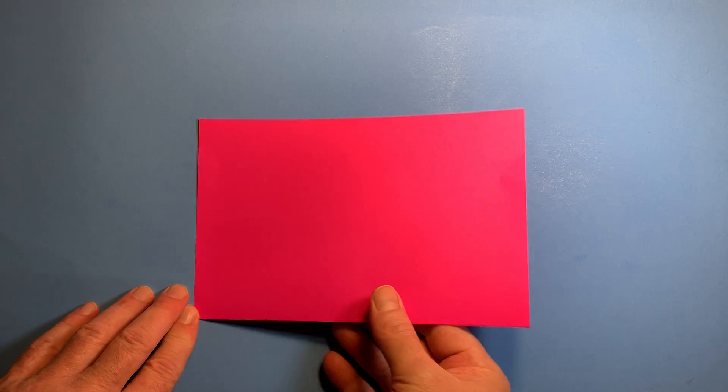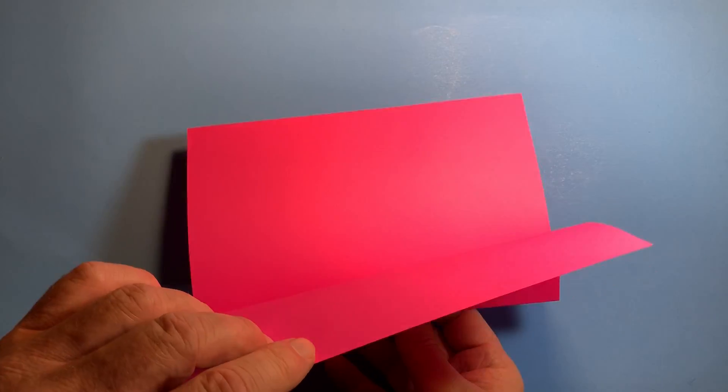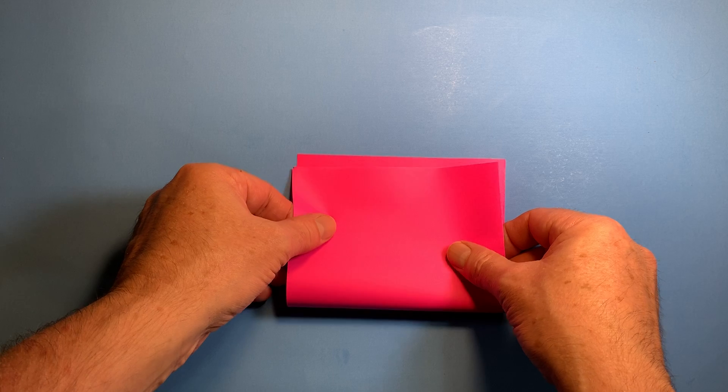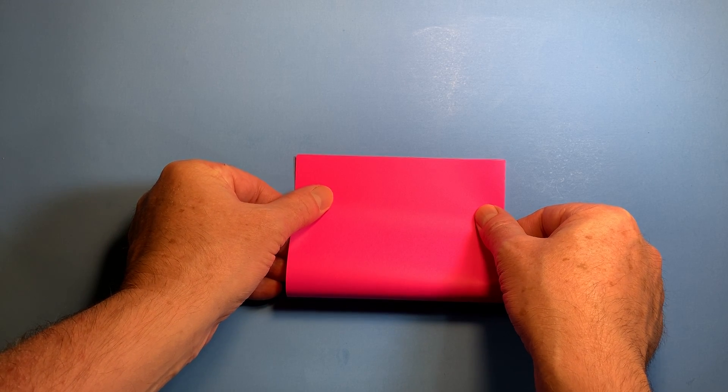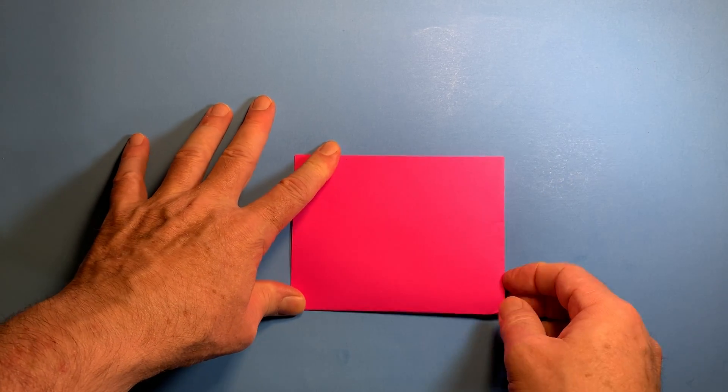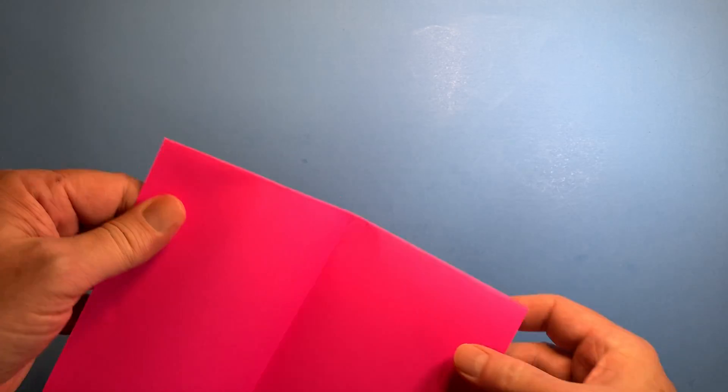You fold your paper in half like this, and then you take it this way and fold it again, lining it up as good as you can, creasing it.